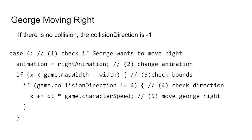The first thing we do is change the animation of George so that he looks like he's walking to the right — that's step two. Step three is that we check the bounds, so we just make sure that George can't walk off the screen and can only walk up to the end of the map. The new information is step four: if game dot collision direction is not equal to four — and remember four is going right — if the collision direction is four, then George won't move. It's only if the collision direction is not four that the next line, x plus dt times game dot character speed, moves George to the right.